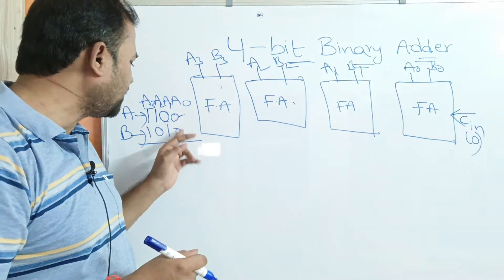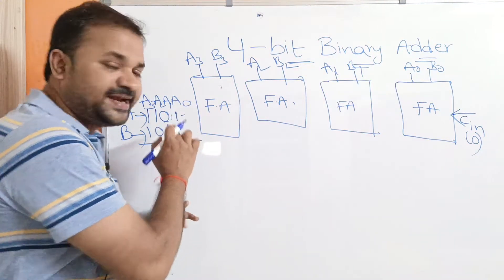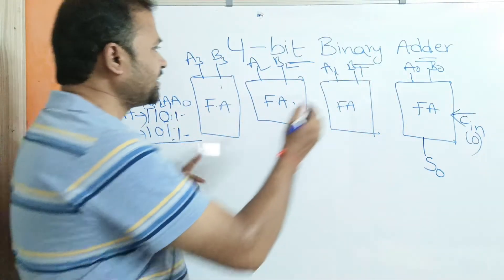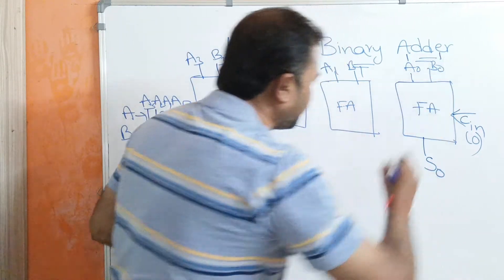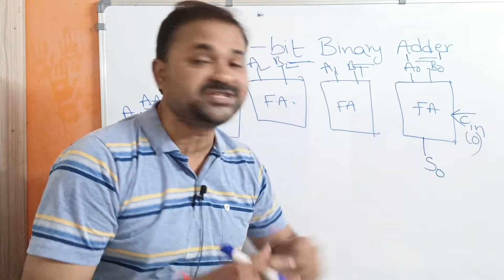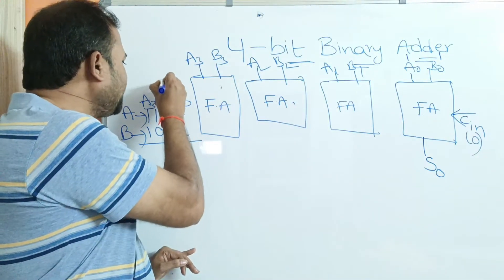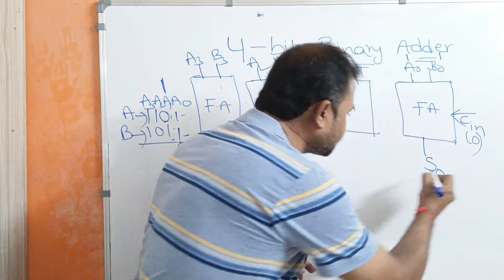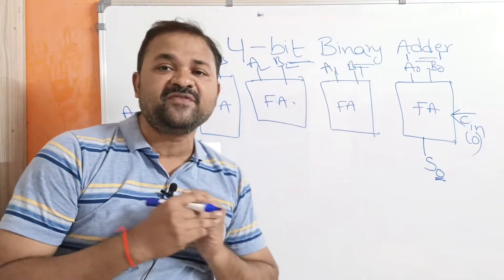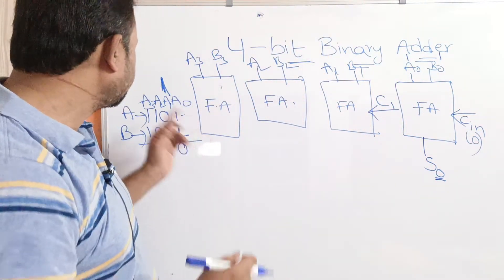The first full adder performs addition on A0=1, B0=1, and input carry CIN=0. Here 1+1 gives a sum of 0, producing output S0=0. We are getting a carry, so we connect that output carry, C1=1, as input carry to the next full adder.